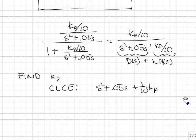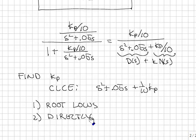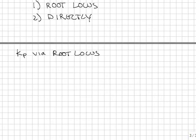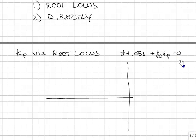Time to find a value for Kp. There are two possible ways to do this. One is root locus. The second is directly. Let's look at the root locus approach. In root locus, we start by plotting the root locus of the system. Our characteristic equation, again, is S squared plus 0.05 S plus 1 tenth Kp equals 0. We divide that into a part that's multiplied by Kp and a part that's not multiplied by Kp. This is the D polynomial. That's the N polynomial.